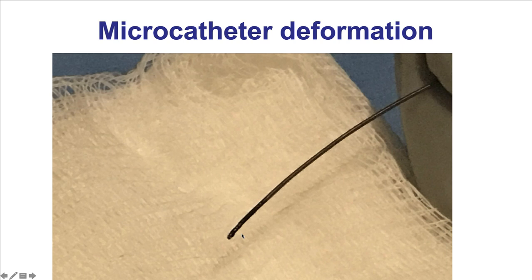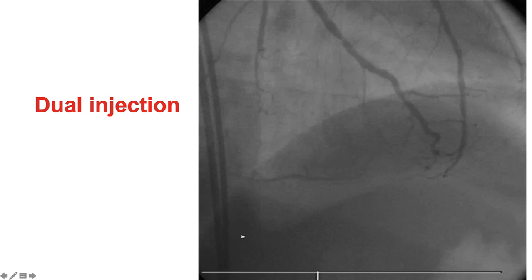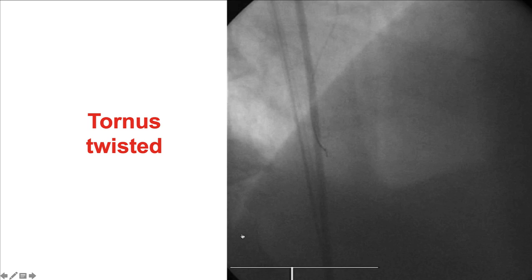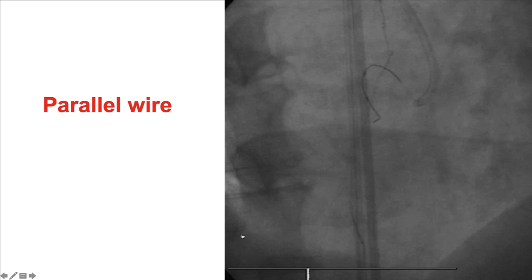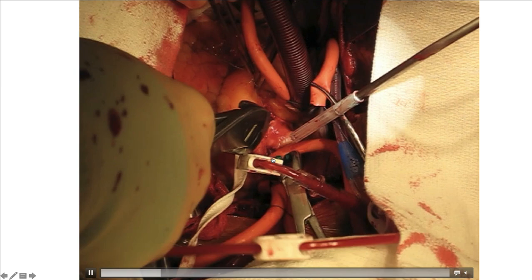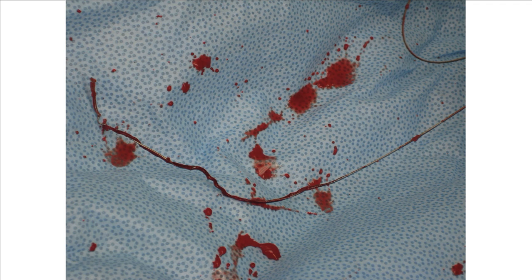Another example shows advancement of a microcatheter through a heavily calcified lesion resulting in damage to the microcatheter tip. In a patient with a right coronary artery CTO with mainly epicardial collaterals, antegrade wiring was attempted and the Tornus catheter was used for the calcified lesion. However, the Tornus catheter became deformed and twisted. Despite using parallel wiring and other techniques, the catheter could not be removed and required surgical removal. It is very important to be cautious in how aggressively the microcatheter is advanced to avoid such complications.